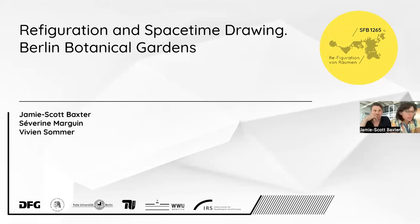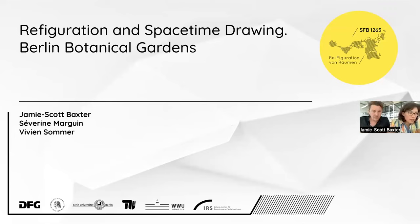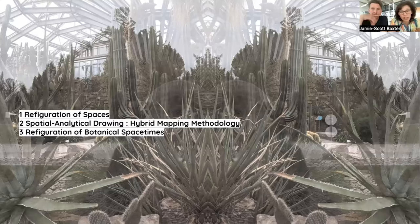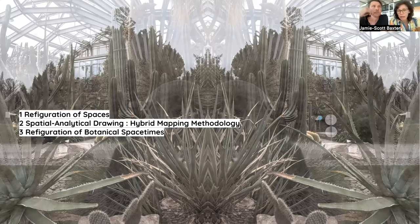We are very happy to take the opportunity in this lecture series to present what we've been doing with hybrid mapping. We will talk about refiguration and space-time drawing tonight, trying to illustrate the development of our interdisciplinary method through a research project we are conducting about the Berlin Botanical Garden. Today we will briefly introduce the theoretical frame, the refiguration of spaces, then discuss the methodology before coming to this example.